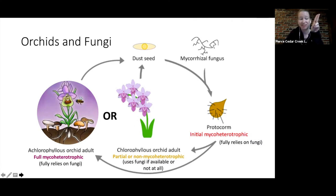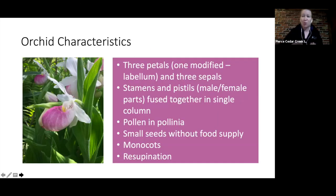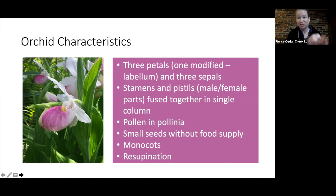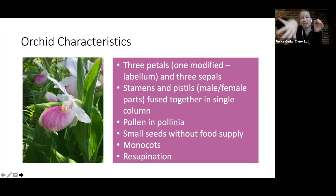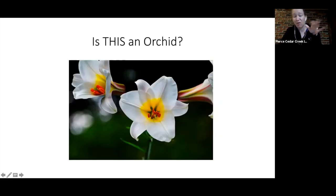In summary, orchid characteristics: three petals with one modified lip, three sepals, stamens and pistils fused in a center column, pollen held in pollinia, very small seeds without a food supply, monocot leaves with parallel venation, and the stem or flower twists so the flower has a particular orientation.